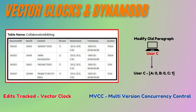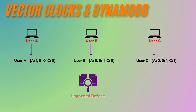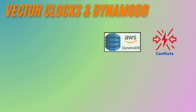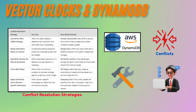DynamoDB's multi-version concurrency control is inspired by vector clocks to handle simultaneous updates. When synchronizing, vector clocks are compared to see if one update is older, newer, or if they are concurrent. If conflicts arise, DynamoDB provides tools that allow developers to implement conflict resolution strategies like last-write-wins.